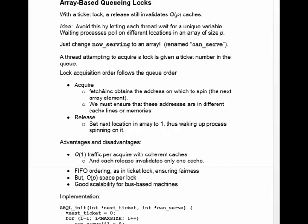The catch is that you've got to make sure that these elements are in different cache blocks. If they weren't, you'd invalidate more than one cache block when a lock was exited. On a release, you just set the next location to one. All the threads that are waiting are spinning until the value of their ticket becomes one, and then they enter the critical section. They exit by setting that variable back to zero, but they also need to set the canServe variable for the next thread to enter to one.